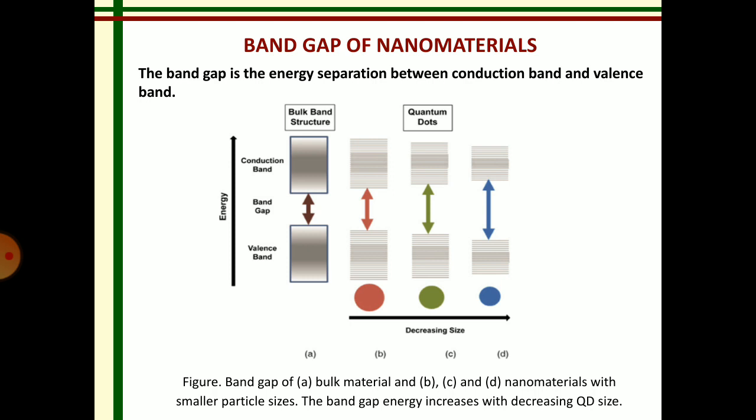Next we look at the band gap of nanomaterials. The band gap is the gap between the valence band and the conduction band. Here a diagrammatic representation shows energy versus particle size, with four diagrams labeled A, B, C, and D. Diagram A shows the band gap of bulk material, while B, C, and D show the band gap for progressively smaller materials. For bulk materials the band gap is very small, but as particle size decreases, the band gap increases and the band gap energy also increases.